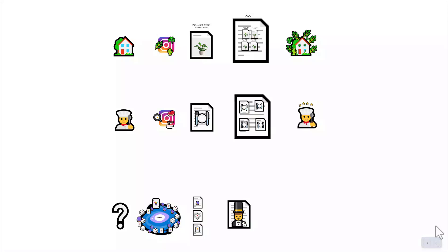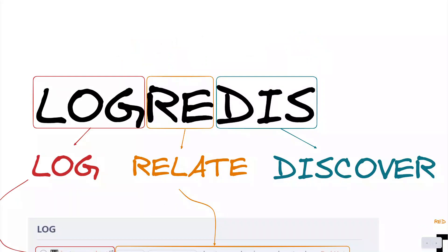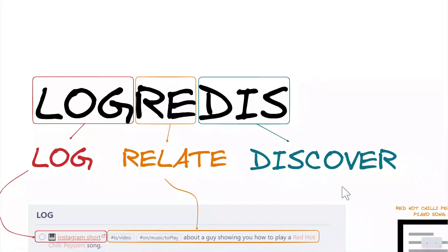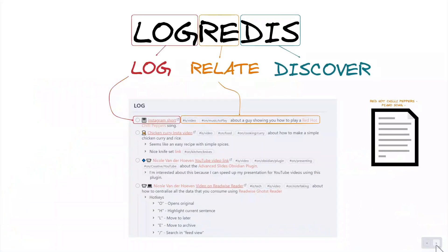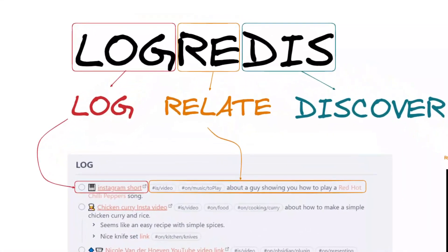The log is quite simple: it is just a one-liner of information that you start tagging. Stage one forces you to think about where the potential future connections could be. To come back to the LOGREDIS system — it stands for Log, Relate, and Discover. Log is the first step in the chain — it's the content acquisition phase where you consume data from books, podcasts, chats with people, movie series, articles, YouTube videos, your own thoughts — ideas captured anywhere that you force into your Obsidian or PKM of choice.